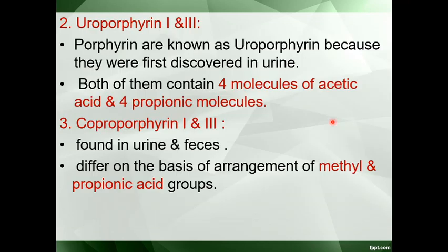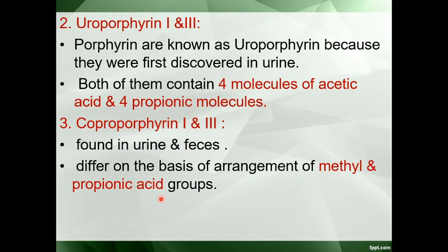Uroporphyrin 1 and 3 are called uroporphyrin because they were first discovered in urine. They contain 4 molecules of acetic acid and 4 molecules of propionic acid. The third type is coproporphyrin 1 and 3, found in urine and feces, and differ on the basis of arrangement of methyl and propionic acid groups. The type and number of groups vary according to the type of porphyrin.